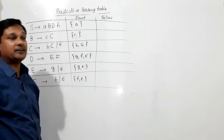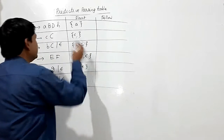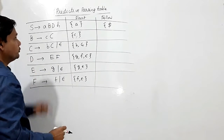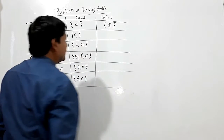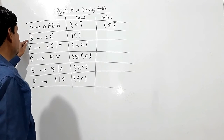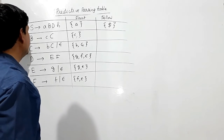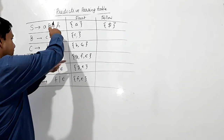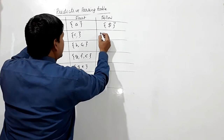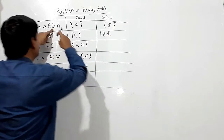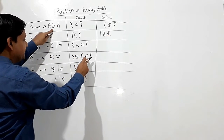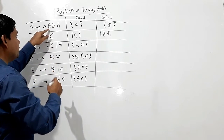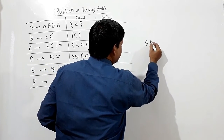FOLLOW(S) is computed next. Since S is the start symbol, FOLLOW(S) = {$}. Now for FOLLOW(B): looking at the production S→ABDH, B is followed by D. So FIRST(D) contributes to FOLLOW(B). FIRST(D) contains G and F.